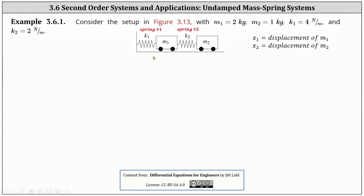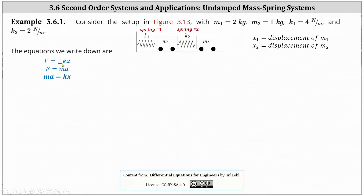To set up the system, we'll be using the equations: force equals the spring constant k times the spring compression x. The force will be positive or negative based upon the direction of the force, and we'll also use force equals mass times acceleration.